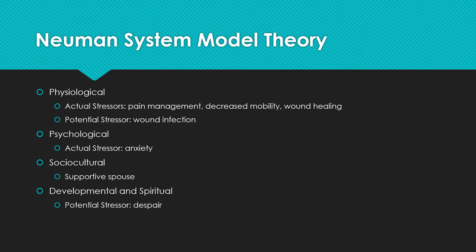According to Oluwakir and Okunlawan 2015, in the Newman System Model Theory, nurses work through the nursing process, first assessing the patient's core structure of survival factors as well as actual and potential stressors. In this practice scenario, physiological pain, decreased mobility, and wound healing are identified as actual stressors, and wound infection is a potential physical stressor. An actual psychological stressor would be anxiety related to the recovery process. From the sociocultural perspective, the patient has a supportive spouse, which would strengthen his internal lines of resistance.